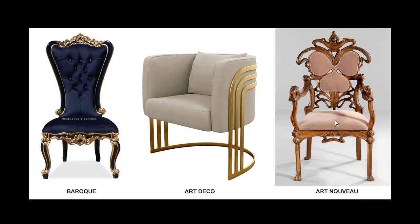This third chair is Art Nouveau. And while, like Baroque, it's also organic and flowery, it has a number of key differences. First, while this chair happens to be symmetric, Art Nouveau is frequently far less symmetric than Baroque. And second, instead of small little concentrations of detail, the flowery elements are much larger and swooping and flowing. Also, since Art Nouveau is supposed to be connecting with nature, you're far more likely to see natural wood as a material.